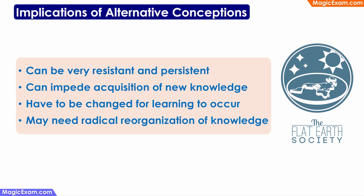What are the implications of these alternative conceptions? If you search for flat earth society or flat earth theory, there are actually thousands of people who believe the earth is flat, not a globe. This is an alternative conception because scientifically we know the earth is round. People who believe in the flat earth theory resist any information that proves the earth is round — it is a very resistant and persistent alternative conception. When an alternative conception is deeply entrenched, the acquisition of new knowledge is blocked, and the alternative conception must be changed for any new learning to occur.